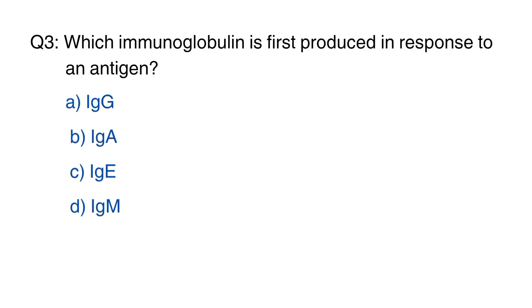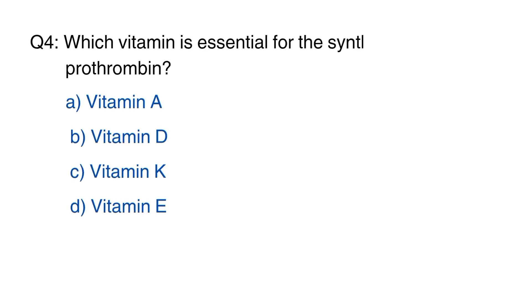Question number 3. Which immunoglobulin is first produced in response to an antigen? The right option is D, IgM.